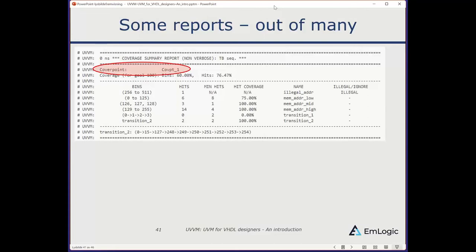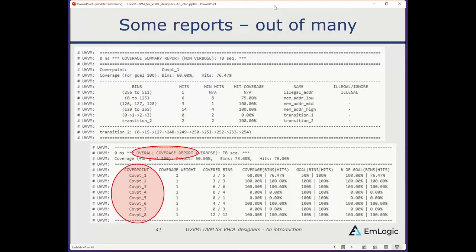Coverage reports show a cover point (automatically named or user-defined), and two coverage metrics: bin coverage (percentage of bins that have reached the required minimum hits — e.g., 60% meaning 3 out of 5 bins are fully covered) and hit coverage (includes hits for bins not yet fully covered, hence a higher number). You can also get an overall coverage report showing all cover points and their statistics.